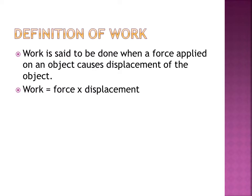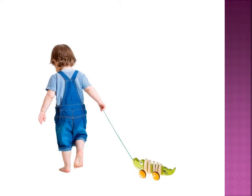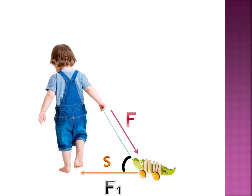Work can be written as the product of force and displacement. When a child pulls a toy with the help of a string, the direction of force is different from that of the displacement. This is the direction of the force and this is the direction of the displacement. In this case, the direction of force makes an angle with the direction of displacement along the horizontal surface. In order to calculate the amount of work done, we have to convert the applied force into the force acting along the direction of displacement. So F1 is the force acting along the direction of displacement.